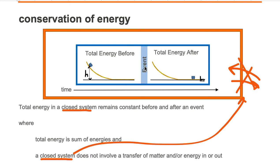The event is the sled sliding down the hill — it's going to go from the top of the hill all the way down to the bottom of the hill. That's the event. So before the event occurs, we want to know what is the total energy, and then after the event occurs, we want to know what is the total energy.